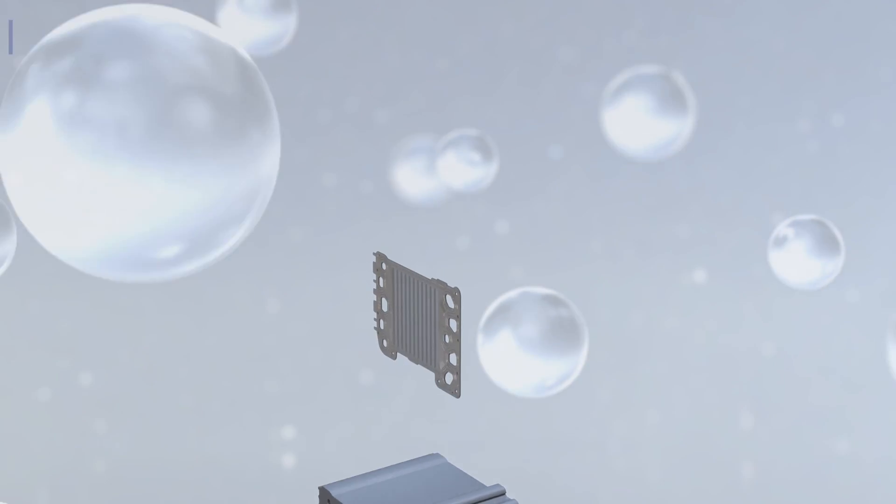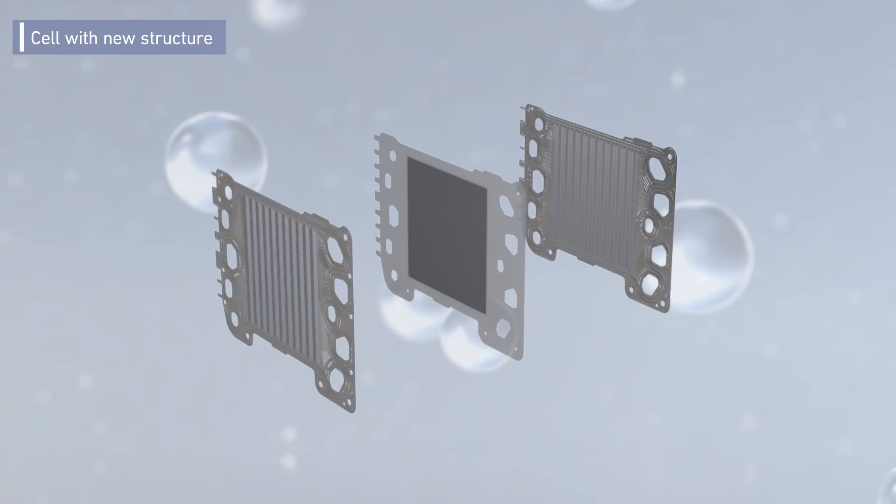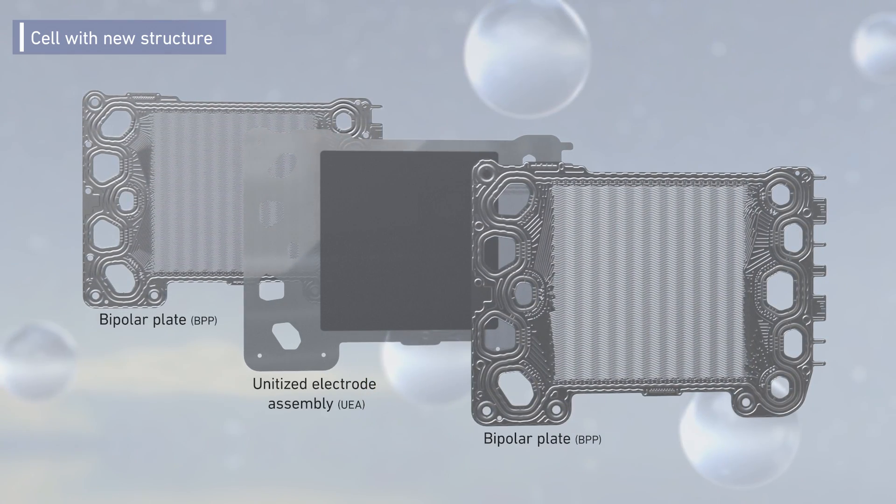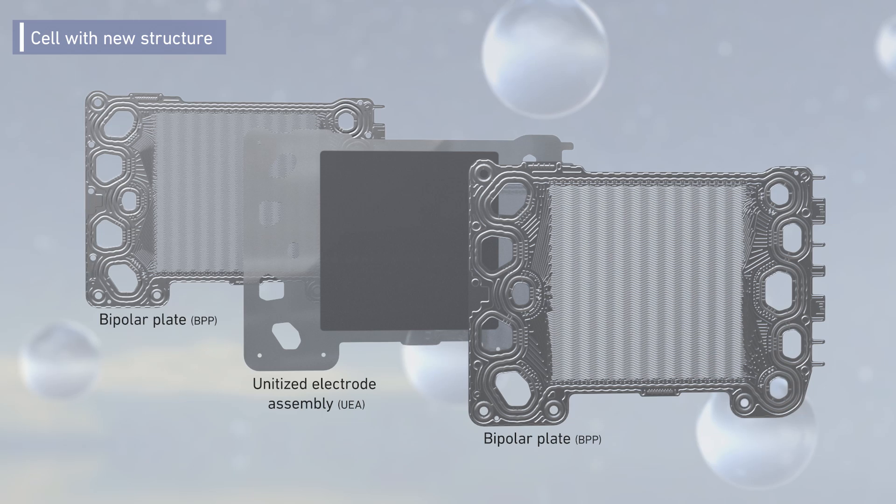The system was evolved by a new cell structure. The cell is formed by three plates, two bipolar plates and a unitized electrode assembly.